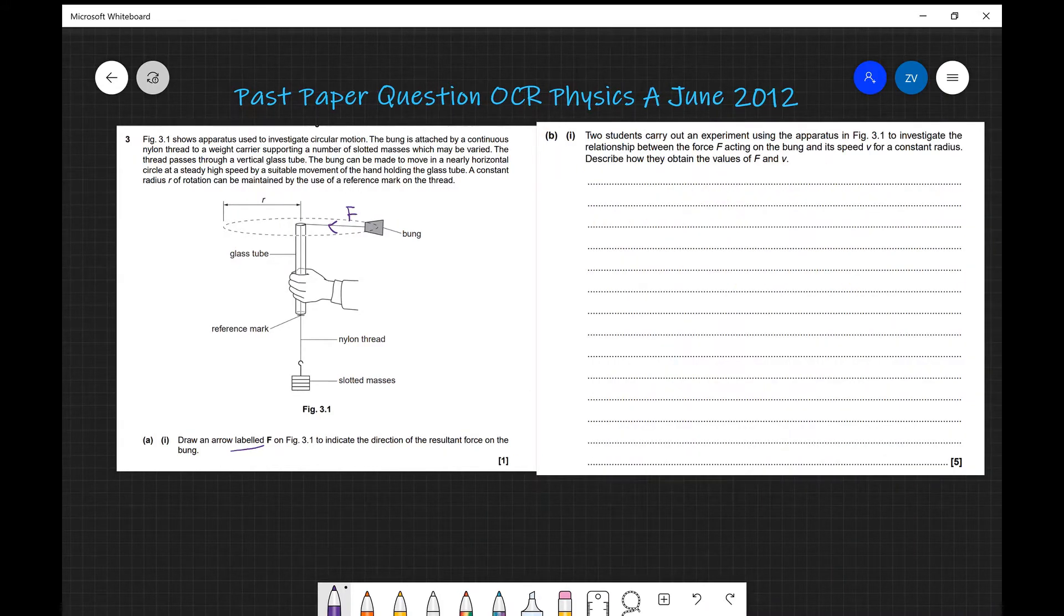Now let's have a look at part b. Two students carry out an experiment using the apparatus which is shown there to investigate the relationship between the force F acting on the bung and the speed for a constant radius. Describe how they obtained values for F and v.